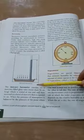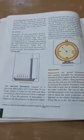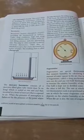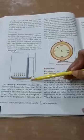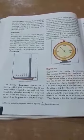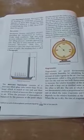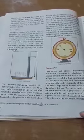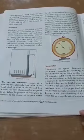The mercury barometer consists of a mercury filled glass tube more than 76 cm long which is sealed at one end and then inverted in a bowl of mercury that is exposed to air. When the pressure of atmosphere is balanced by the pressure at the point where the tube intersects the surface of the mercury in the bowl, the mercury in the tube stops moving up and down and creates a vacuum at the top.